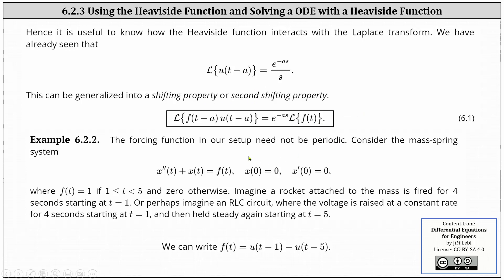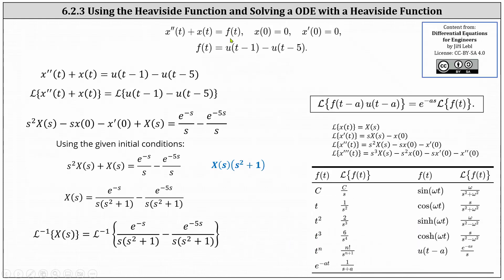Now let's look at an example. The forcing function in our setup need not be periodic. Consider the mass-spring system x″ + x = f(t), where x(0) = 0 and x′(0) = 0, and f(t) = 1 only on the interval [1, 5), and zero otherwise. Imagine a rocket attached to a mass fired for four seconds starting at t = 1, or an RLC circuit where voltage is raised at a constant rate for four seconds starting at t = 1 and held steady again at t = 5. We can write f(t) as u(t − 1) minus u(t − 5), giving x″ + x = u(t − 1) − u(t − 5).